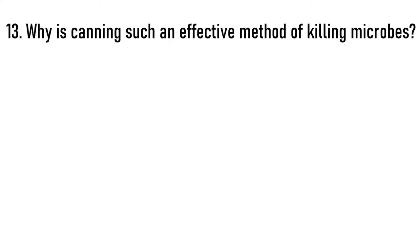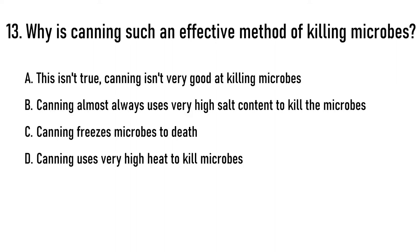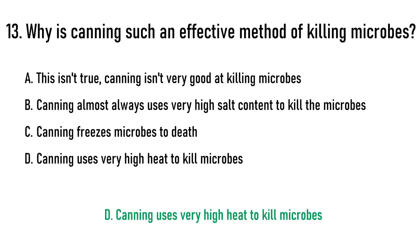Why is canning such an effective method of killing microbes? Options are A) canning isn't very good at killing microbes, B) canning almost always uses very high salt content to kill microbes, C) canning freezes microbes to death, D) canning uses very high heat to kill microbes. The correct answer is option D — canning uses very high heat to kill microbes.